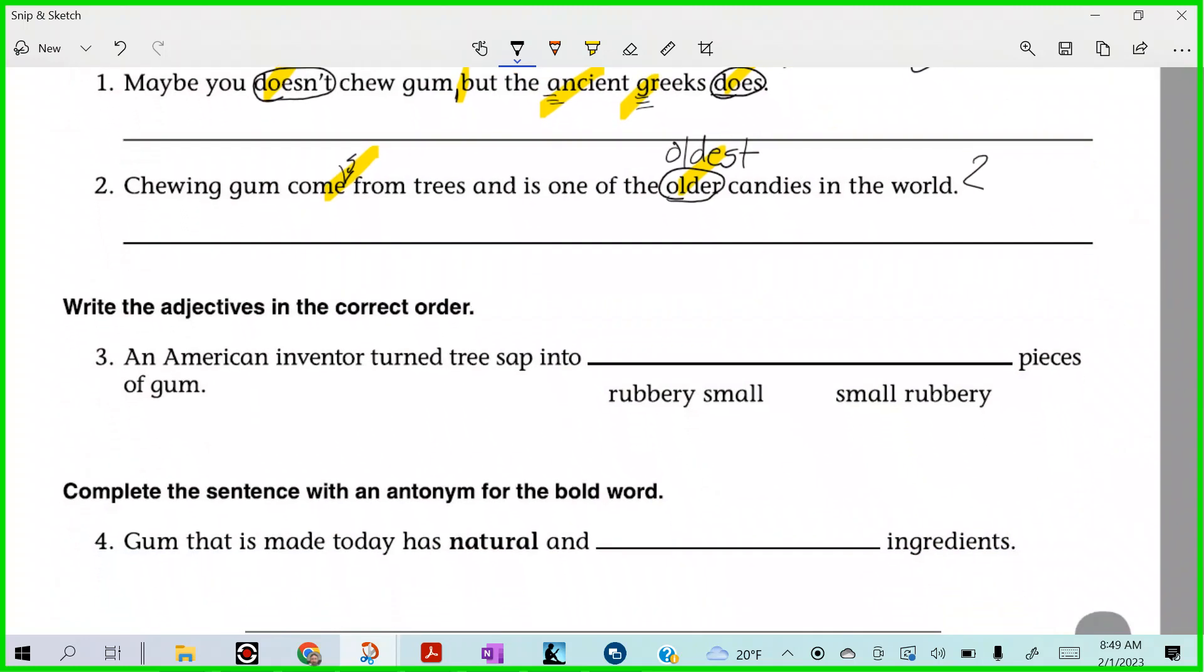Here we go. Ready? Write the adjectives in the correct order. So, an American inventor turned tree sap into rubbery small pieces of gum. Does that even sound right? How about this one? An American inventor turned tree sap into small rubbery pieces of gum.